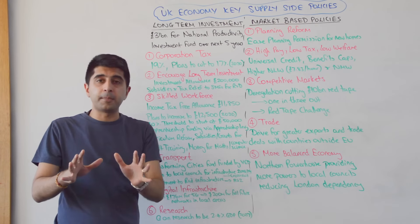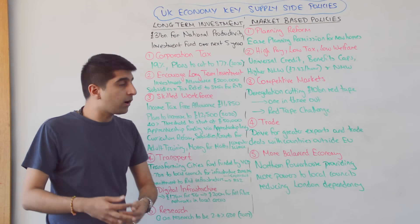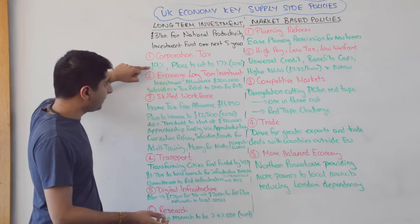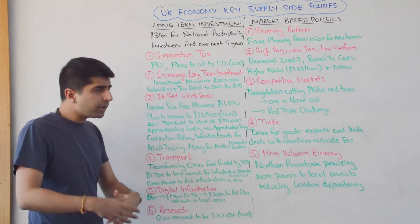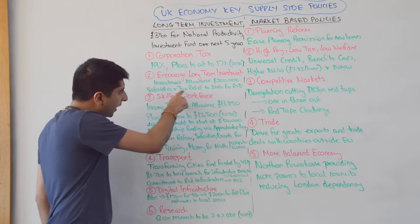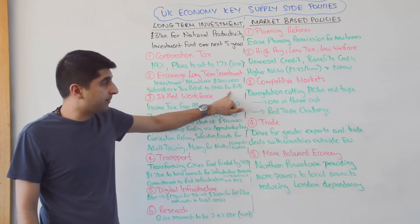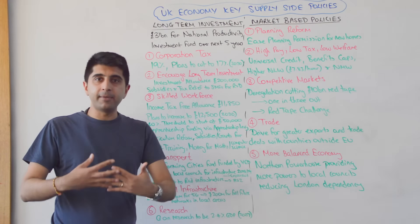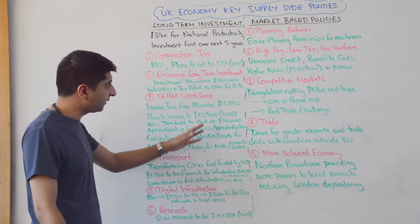The first policy is actually market-based — corporation tax cuts. Since the Conservatives came into power, corporation tax has been cut by 4%, from 23% before 2010 to 19% now, with plans to cut it further to 17% in 2020. On government spending side, there are subsidies and tax relief available for small and medium enterprises engaging in research and development, and an annual investment allowance of £200,000 — so businesses can claim back up to £200,000 of capital investment against their profits.